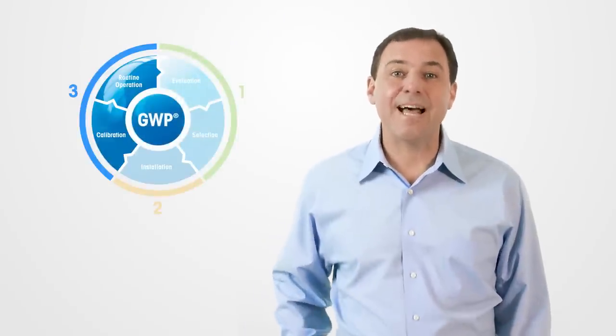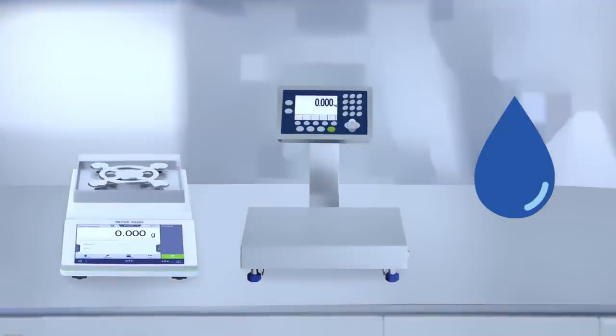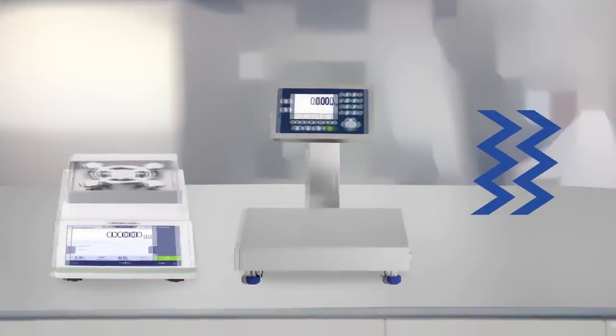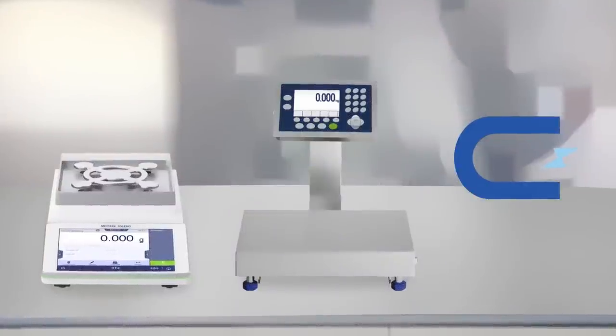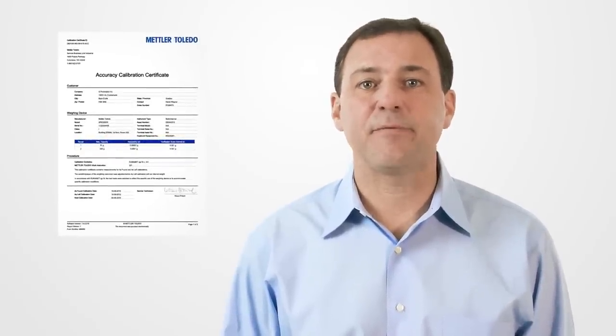Finally, in step number three, we need to calibrate the instrument. Calibration is a vital part of any weighing program. Using the accuracy calibration certificate, we calibrate to assess the performance of the instrument at the location where it is being used. From the results of calibration, we link the device's performance with your weighing process requirements to ensure the instrument is fit for purpose.